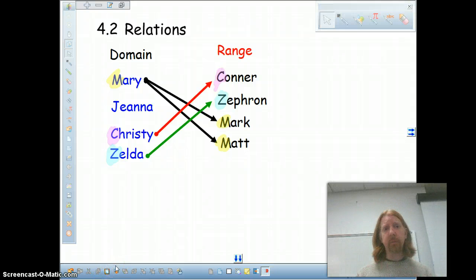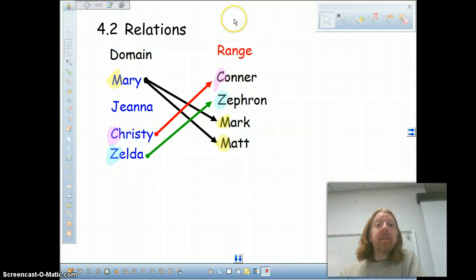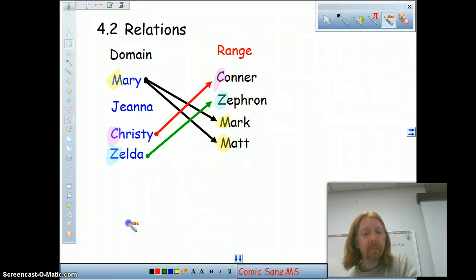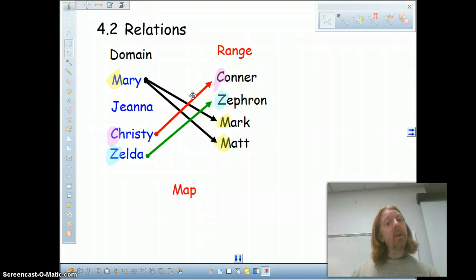So, when we talk about a relation, we're talking about a rule that takes an item from the domain and pairs it with one or more items in the range. Now, there's lots of different ways we can do these pairings. For example, you can see Mary is paired with two boys' names, Mark and Matt, whereas Gina is not paired with anything. So our relation isn't very well defined if we aren't using everything in our domain. In the next section, we'll talk about why this is not a function. This is also an illustration of one of the ways that we can illustrate and demonstrate a particular relation. We call this a map.